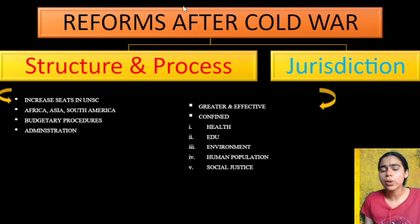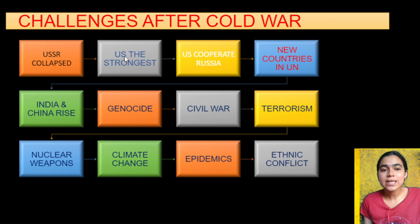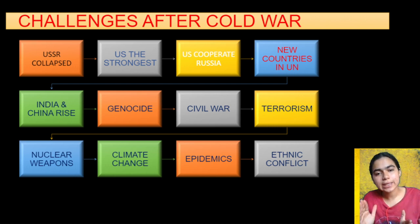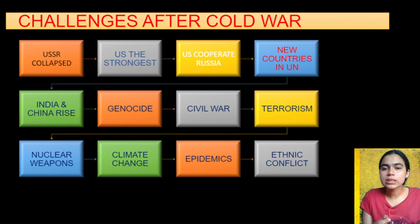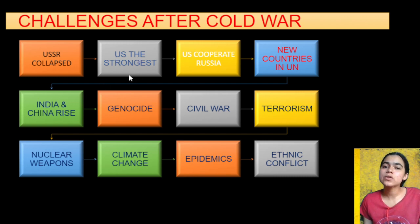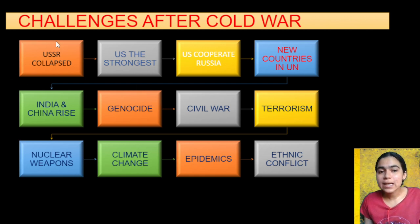We need to understand why we bring reforms. The Cold War ended, and the United Nations was created when the US and USSR had their conflict that didn't convert into actual war. Then in 1991, the Cold War was done. The USSR collapsed. When there was a race between the US and USSR and one won, the US became the strongest. After that, the USSR and US became friends — cooperation started. Then the USSR was disintegrated.